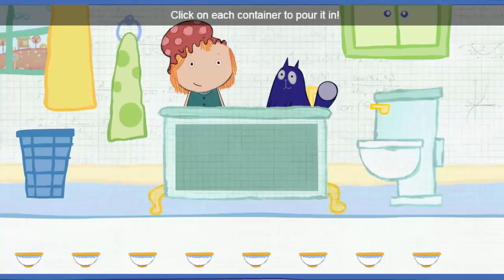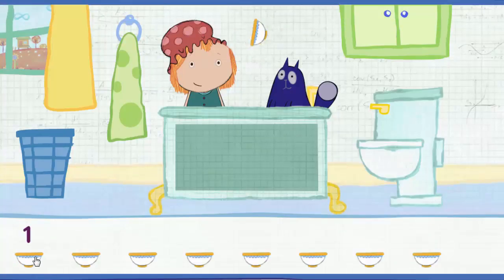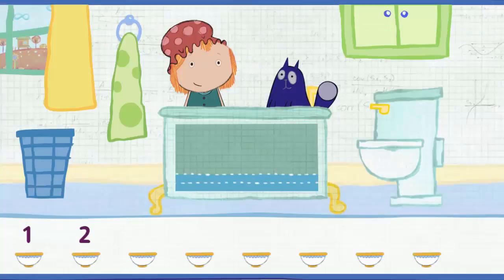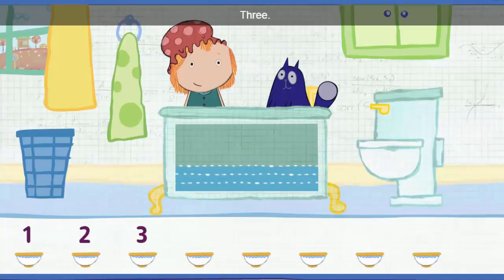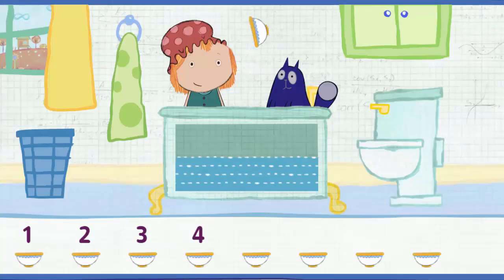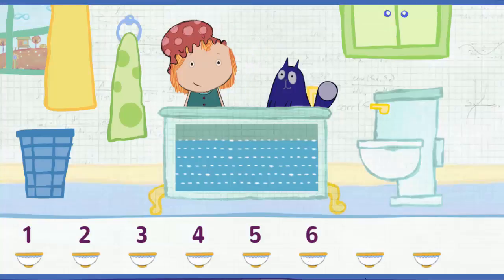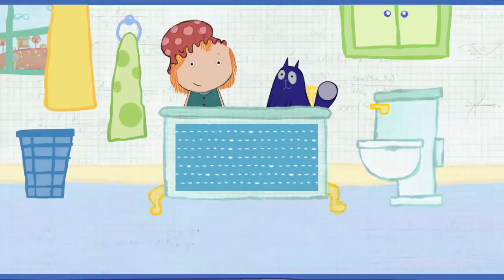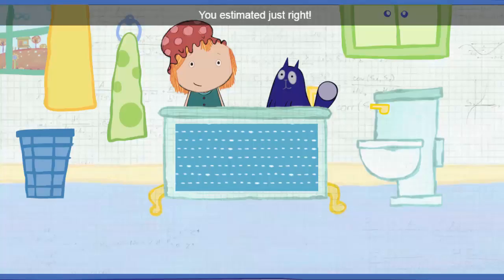Click on each container to pour it in. Let's add this one, and then go down the line. One. Two. Three. Four. Five. Six. Seven. Eight. All right — the tub is full. You estimated just right!